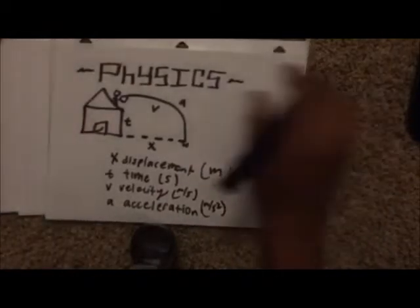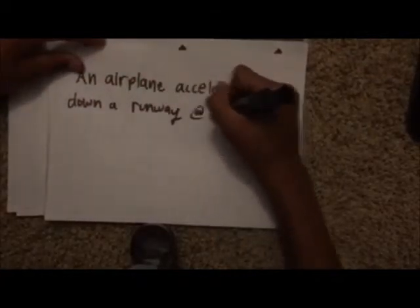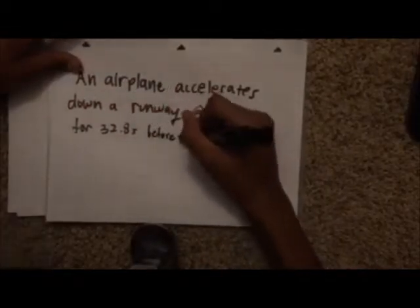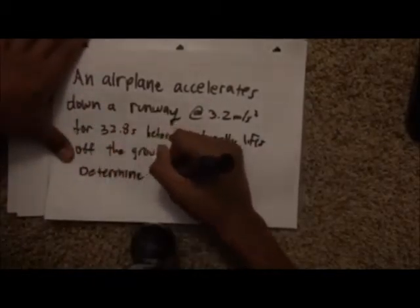Before I show the four kinematics equations, I will first show you a problem. An airplane accelerates down a runway at 3.2 meters per second squared for 32.8 seconds before it finally lifts off the ground. Determine the distance traveled before takeoff, assuming initial velocity is zero.